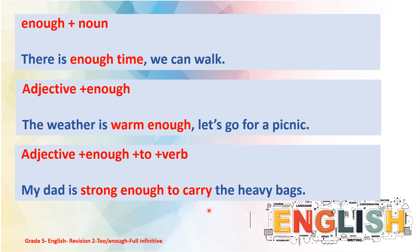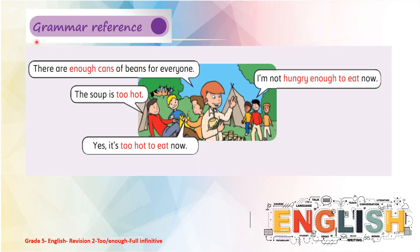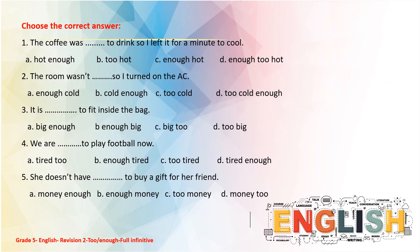Here is the grammar reference from your student book. These children are on a picnic. Look at what they are saying: 'There are enough cans of beans for everyone' — enough before the noun. 'The soup is too hot to eat now' — too plus adjective plus to plus verb. 'I'm not hungry enough to eat now' — adjective plus enough plus to plus verb.